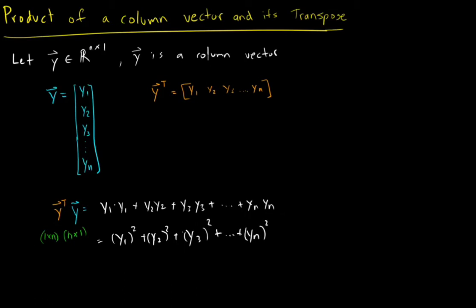Now we can condense this into sigma notation. So this is actually the sum of yᵢ squared where i equals 1 and it goes up to n.